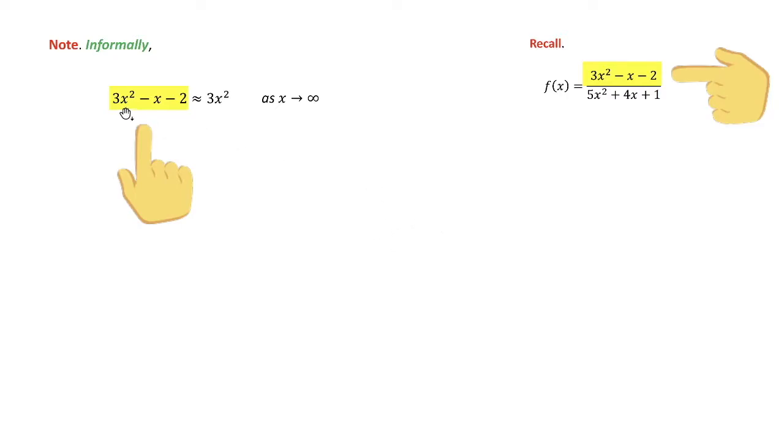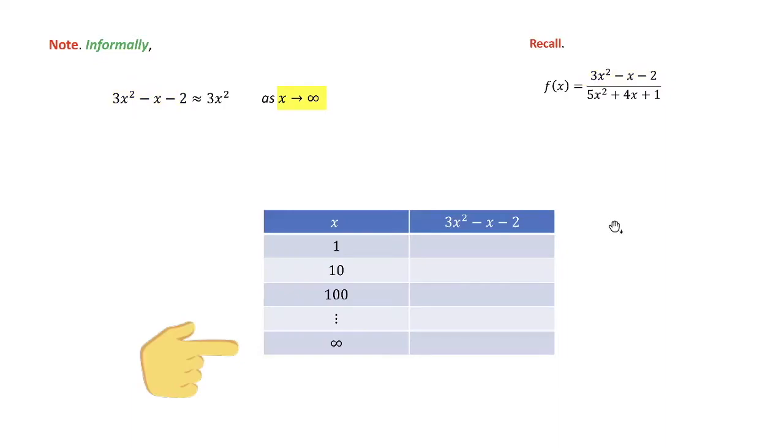Notice, as x gets very big, the top 3x squared minus x minus 2 looks like 3x squared. How does that work? There's nothing wrong with using intuition. It's a good check on the actual math. You should always have some idea what the answer is before you do any problem. So let's take a look. When I say x goes to infinity, I'm talking about a trend like the limits we did before, 1, 10, 100. So x is getting larger and larger and larger, and we're looking for that trend.